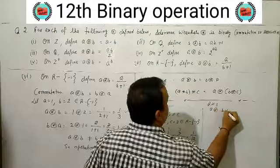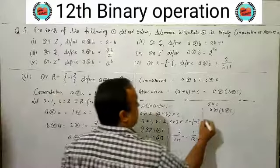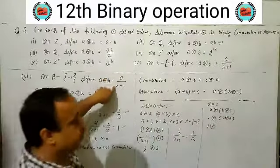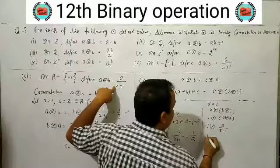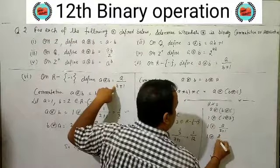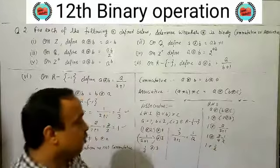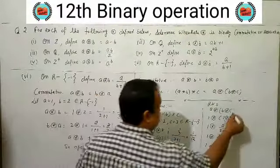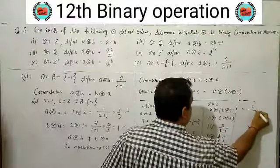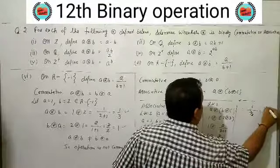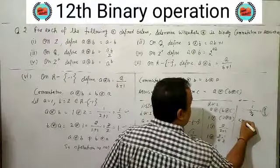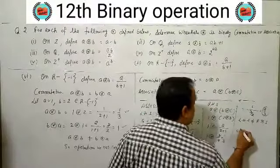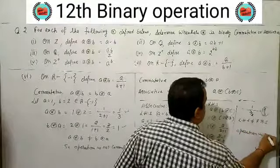Right hand side: A★(B★C) = 1★(2★3). First: 2★3 = 2/(3+1) = 2/4 = 1/2. Then 1★(1/2) = 1/((1/2)+1) = 1/(3/2) = 2/3. Left side = 1/12 and right side = 2/3, which are not equal.